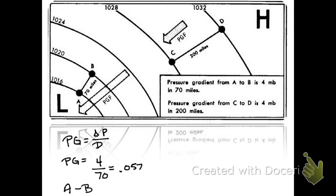Now we're going to calculate that and compare it to line CD. That's the line that's to the right of your screen, closer to the high. We do that again by the same thing. We have 4 millibars difference change. That's 1028 to 1032. That's 4 millibars. Divide it by the distance between those isobaric lines. That's 200 miles. We come out with a pressure gradient of 0.02.